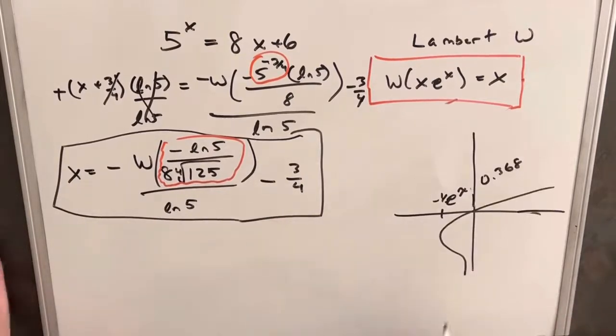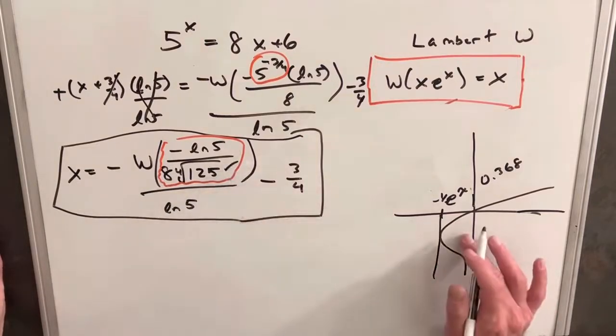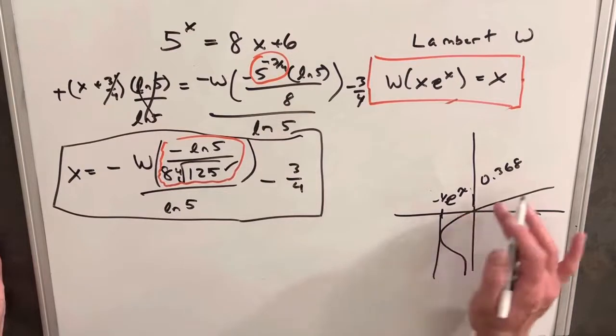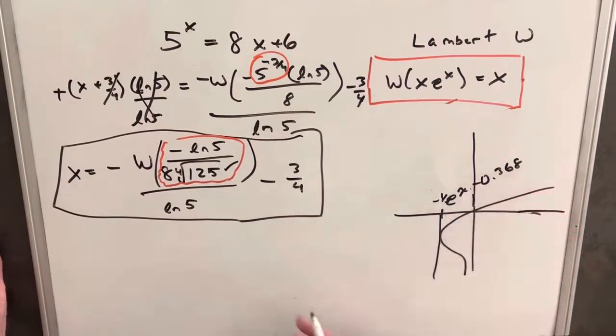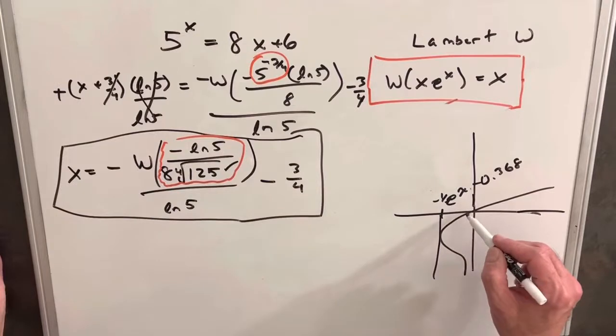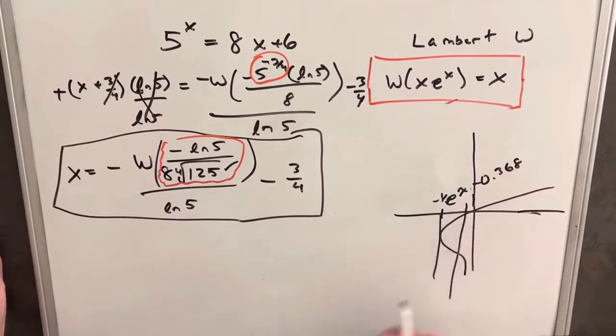Looking real quick at the graph, we have this line at minus 1 over e. This number is clearly negative, and it clearly has to be greater than this minus 0.368, just because of what we want over there. So it's going to be somewhere in here, so it's going to have two real solutions.